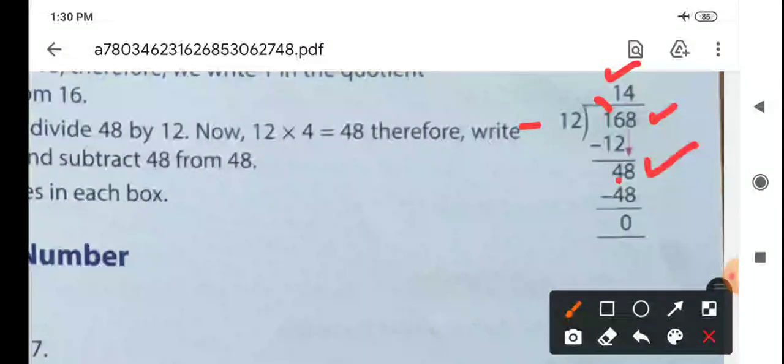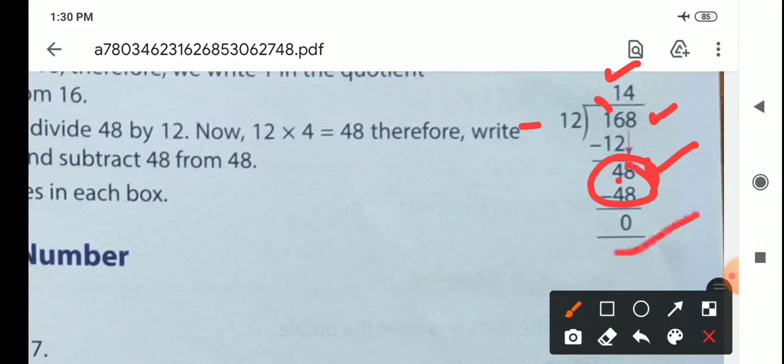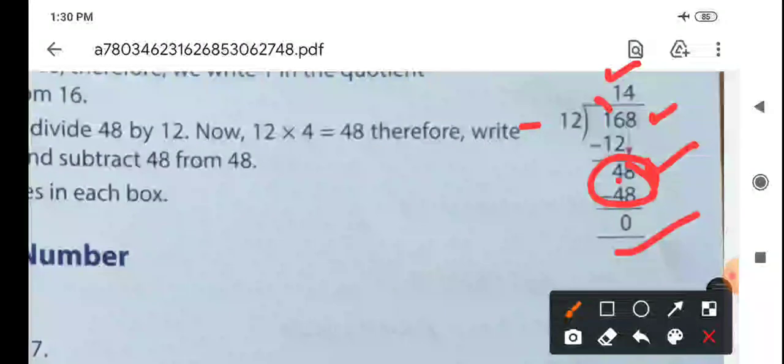Then 12 times 4 is 48. 48 minus 48, if we do minus, then we get 0. So 14 is the quotient and 0 is the remainder.